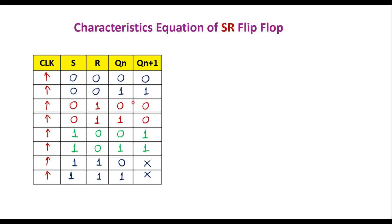We have already studied about the clocked SR flip-flop. This is the truth table — also known as the function table — of the clocked SR flip-flop, which I have explained in my clocked SR flip-flop video. In the SR flip-flop, S and R are the inputs, Qn is the present state, and Qn+1 indicates the next state of the flip-flop.